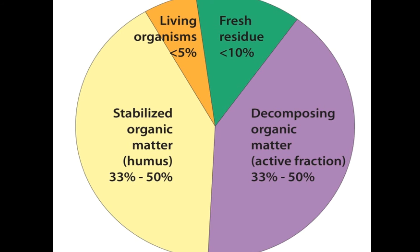Next we have decomposing organic matter. This is the portion that soil microorganisms decompose because it is used as food by the organisms. Active soil organic matter decomposes faster than other components of soil organic matter in response to management changes.